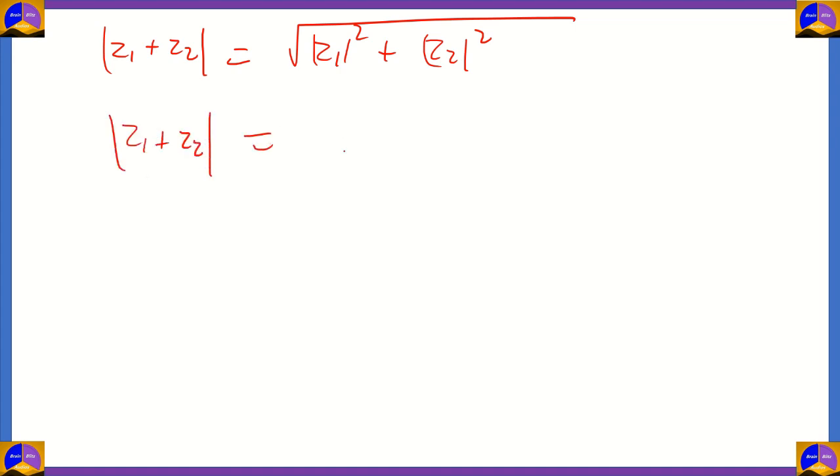Mod of z1 plus z2 equals 5 squared plus 5i squared. That's 5 squared plus 5 squared. 5 squared is 25. So, you have 2 times 25 inside the square root. Under root of 25 is 5. Therefore, the correct answer is 5 root 2.